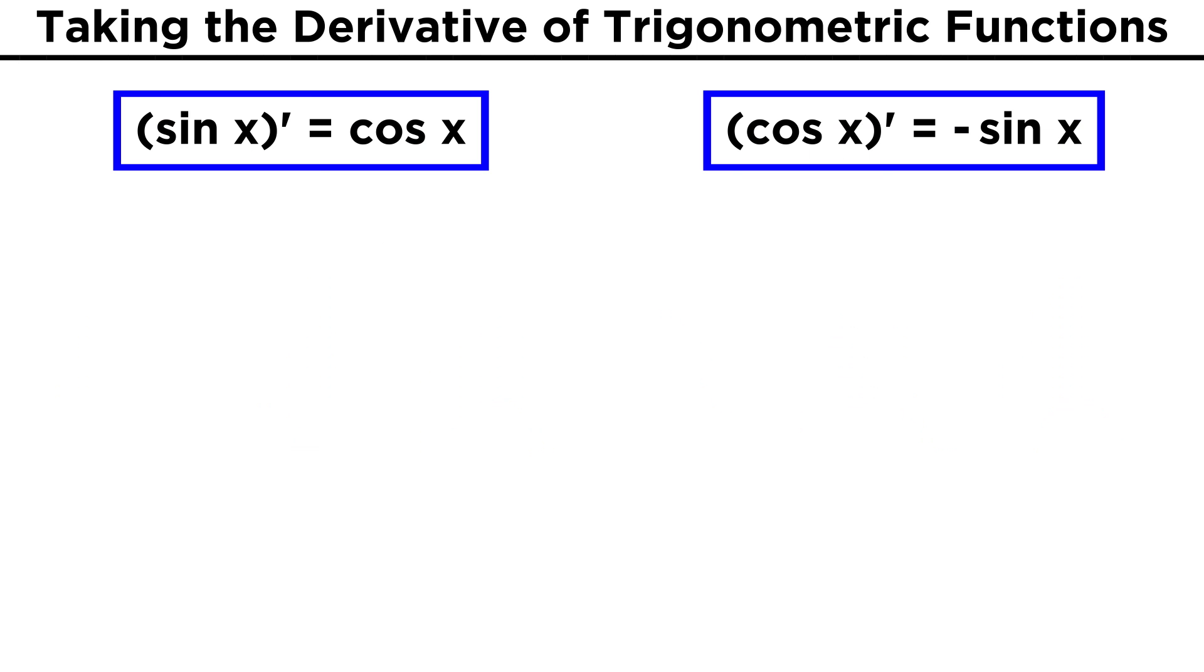From here, we can find all of the other trig function derivatives by using rules we already know. For example, we know that tangent x is equal to sine x over cosine x. So if we want to find the derivative of tangent, we just need the quotient rule.